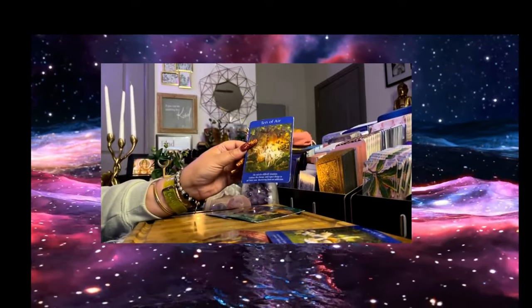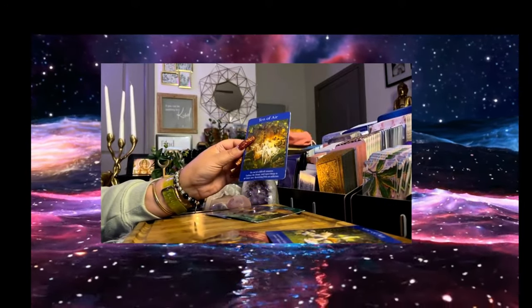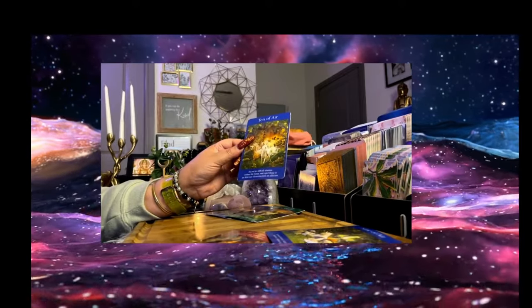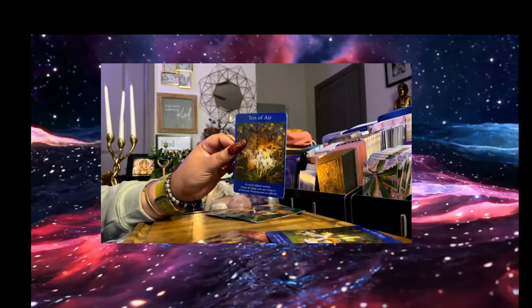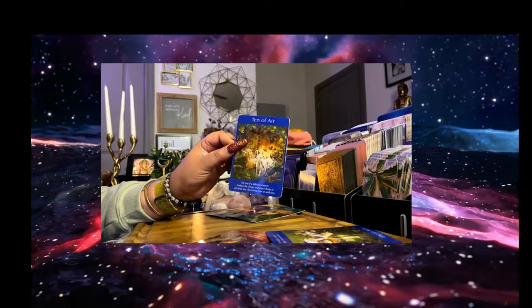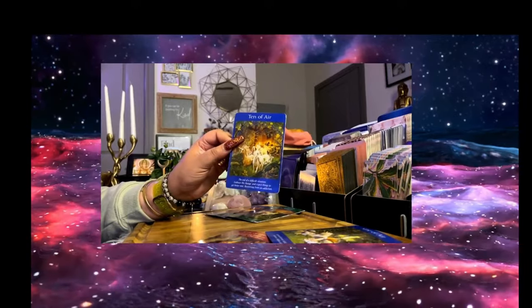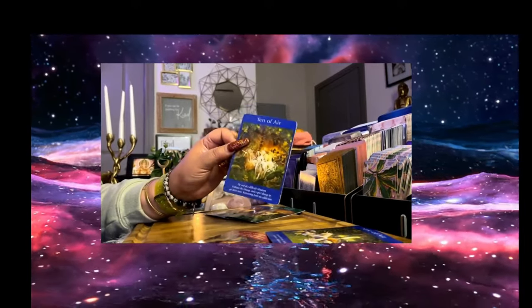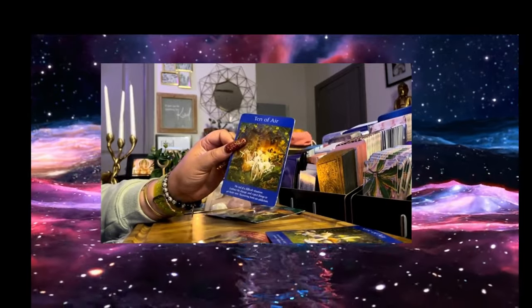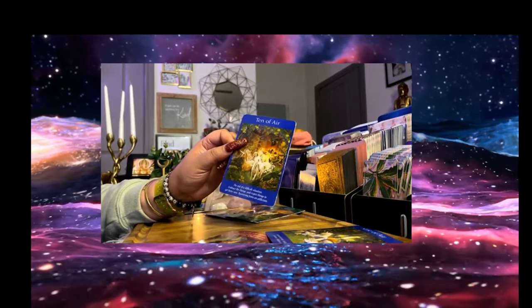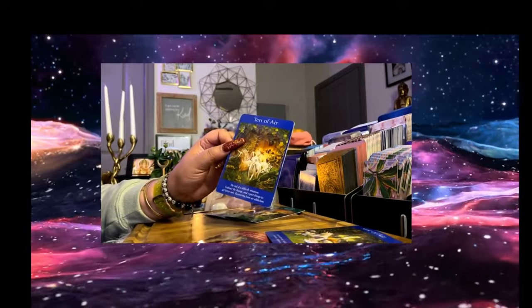The middle card, the tent of air, the end of difficult situations is here y'all. Embrace the change. Expect things to get better. Now it says recovering from an addiction. So some people may have been in a very hurt place. They could have been homeless. They could have been addicted to substances, addicted to others that may not have given the reciprocal energy back to them. And they completely became depleted of themselves, completely became depleted of the energy.